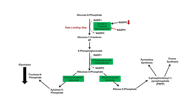In cells that have nucleotides, those nucleotides can actually be broken down into ribose-5-phosphate. Ribose-5-phosphate can then be converted back into earlier steps of the pathway — many of these arrows are reversible. So ribose-5-phosphate can be redirected into glycolysis through ribulose-5-phosphate, xylulose-5-phosphate, and into fructose-6-phosphate, either for ATP generation or for glucose generation.